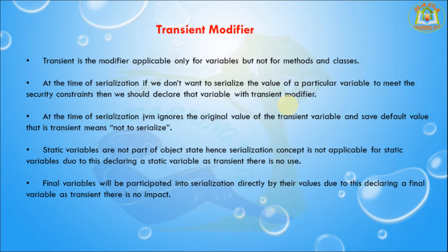At the time of serialization, JVM ignores the original value of the transient variable and saves the default value — transient means not to serialize. Static variables are not part of an object state, hence the serialization concept is not applicable for static variables.